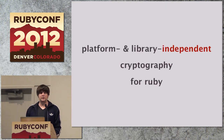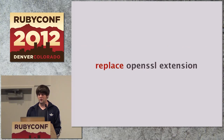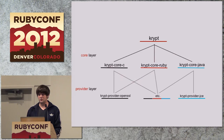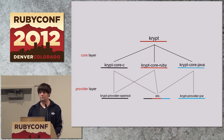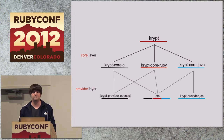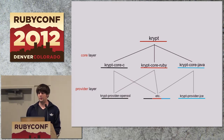In one sentence, you can describe Crypt as being a platform and library independent cryptography framework for Ruby. Its ultimate goal is to replace OpenSSL. That's a bird's eye view of Crypt in general — as you can see, there are different layers, and we're going to look into each layer now in detail.